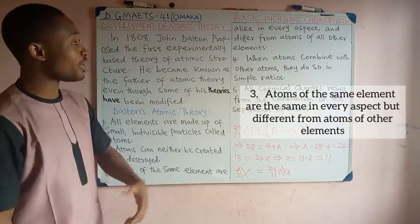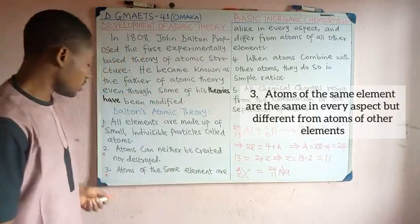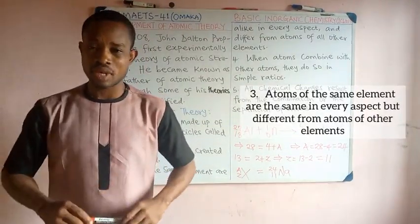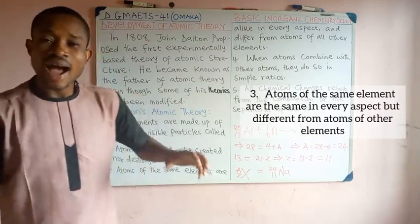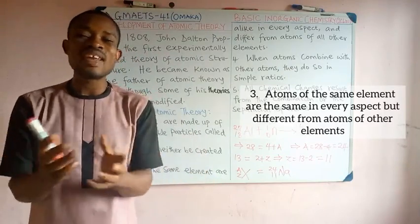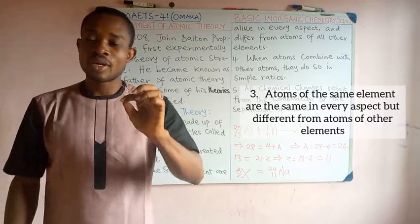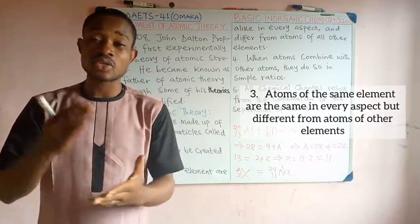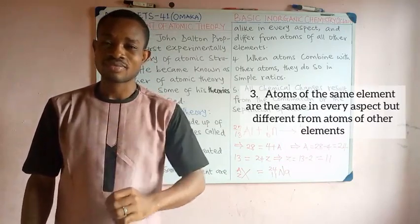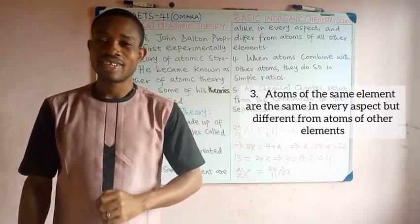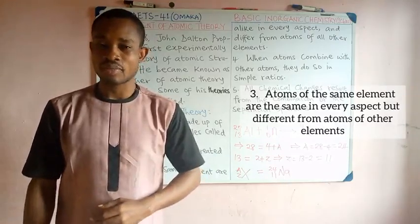The third theory: atoms of the same element are alike in every aspect but differ from atoms of all other elements. This theory has also been modified. The discovery of isotopes shows that atoms of the same element may not be alike in all aspects. Isotopes of an element have the same chemical properties, but their physical properties are different, so it is not actually true that in all aspects atoms of the same element will be the same.